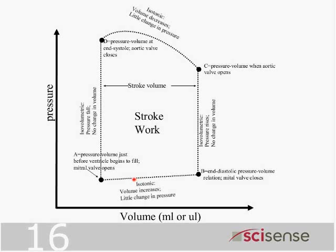Let's pick a time at the beginning of contraction right here. This is the time when the heart is the biggest it gets. We call it the end-diastolic volume, and the pressure is fairly low. The ratio of pressure to volume gives you a static measure of compliance of the ventricle — an extremely important parameter.